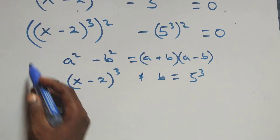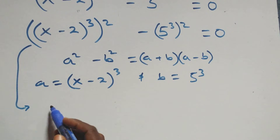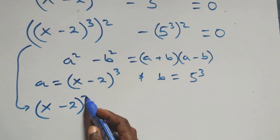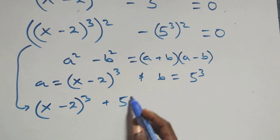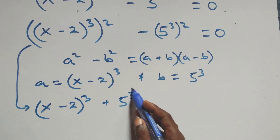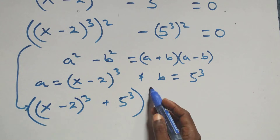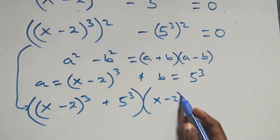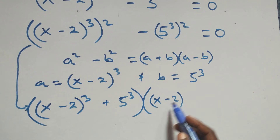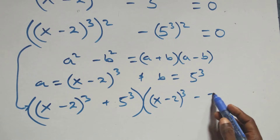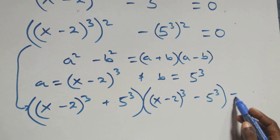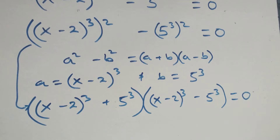So this becomes: open bracket (x minus 2) all raised to power 3 plus 5 raised to power 3, close bracket, times open bracket (x minus 2) all raised to power 3 minus 5 raised to power 3, close bracket, equals to 0.